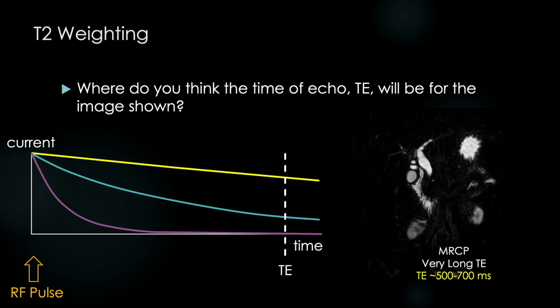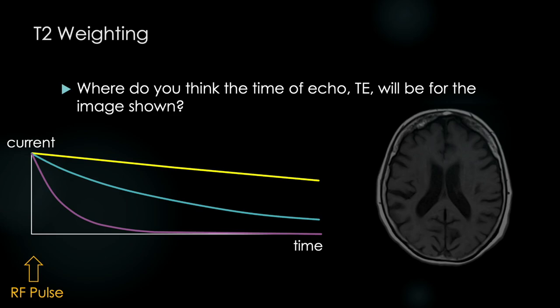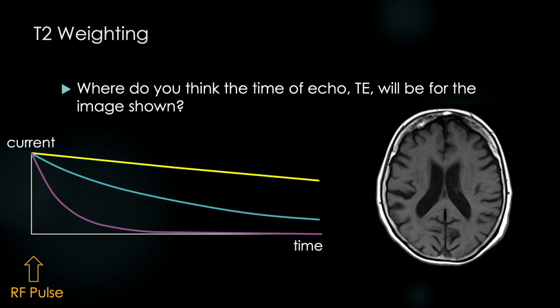Here I'm showing you a picture from an MRCP study, which stands for Magnetic Resonance Cholangiopancreatography, in which we want to visualize fluid within the biliary and pancreatic ducts. As you can see, this will have a very long TE, at our institution that ranges from 500 to 700 milliseconds. And this correlates with a point at which almost all other signal has decayed except for water. How about this image? Where do you think the TE should be?